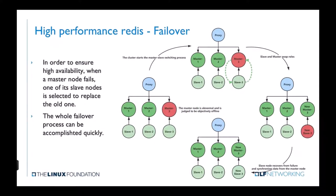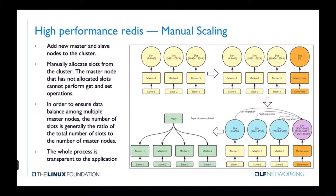The multiple-master and multiple-slave design improves read/write efficiency and reliability. This picture indicates how we recover when a master node fails to ensure high availability. In our implementation, we use a one-to-one backup strategy: each master node has only one slave node, and the slave node copies all data from the master node. We use manual scaling to add new master-slave pairs to the existing cluster.